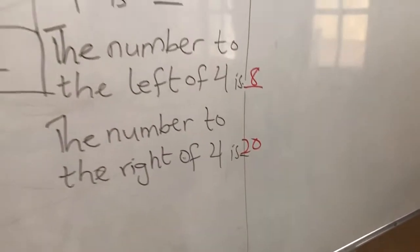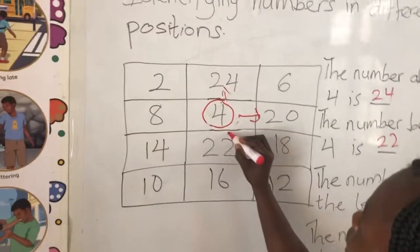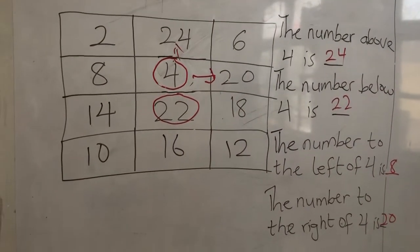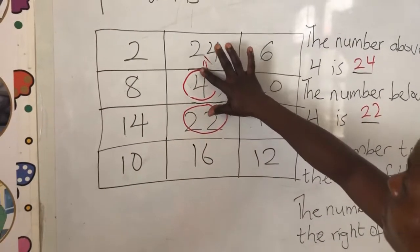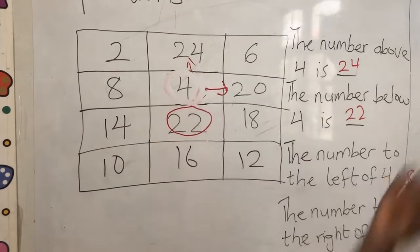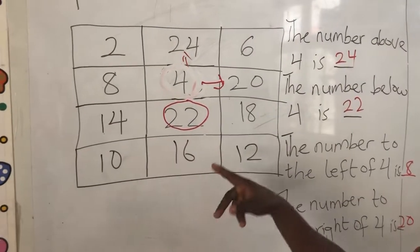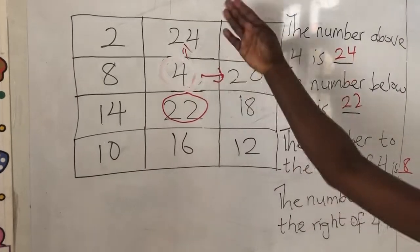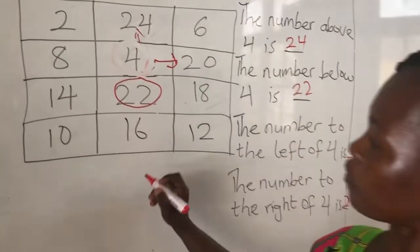Let's take the next example. If I should circle my 22. Now, this will not be circled. So, the number above 22 will be what? 4.